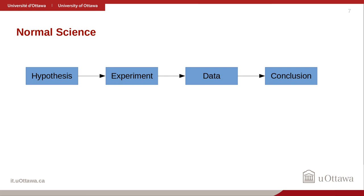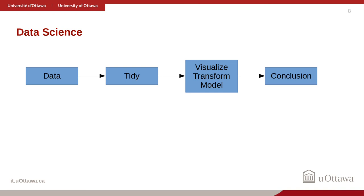Normally in science you have a hypothesis, you do an experiment, the experiment gives you data, and from the data you reach a conclusion. For data science you start with the data, then you tidy it up — because you can never fully trust any dataset you receive — and then you have a loop of visualizing, transforming, and modeling the data until you reach a conclusion.